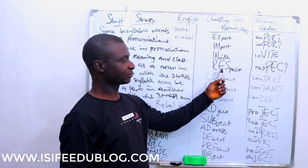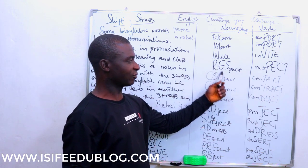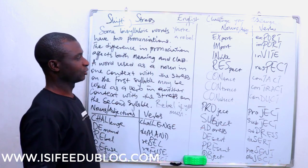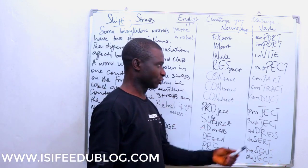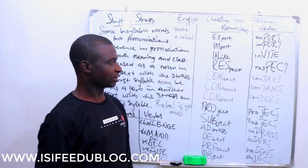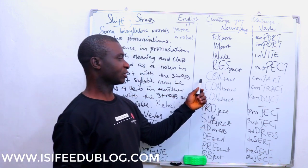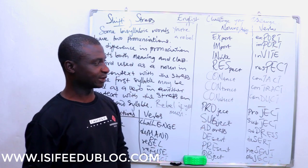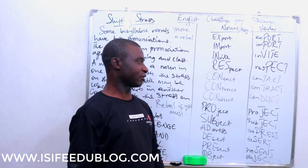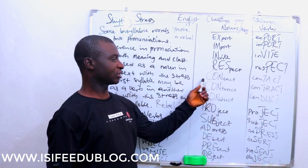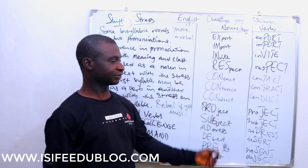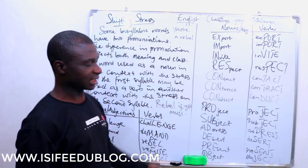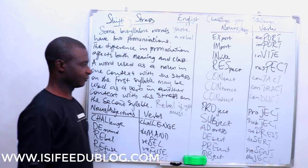'RESspect' — that's the noun form; 'resPECT' is the verb. You earn 'RESpect'; you 'resPECT' others — respect other people's privacy. 'CONtact' — a list of names and telephone numbers on your phone is your 'CONtact'. 'ConTACT' as a verb means to get in touch with someone.